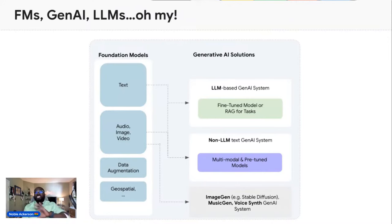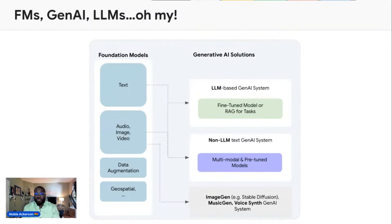I separate external LLMs — which enterprises have no control over, often API-only access models like Cohere, Anthropic, and some offerings by Google Cloud Services and Vertex — from internal LLMs like Meta 2, which Google Cloud announced was now available or would be soon available in the model garden that Alan talked about as well. That's great for the types of customers I serve.